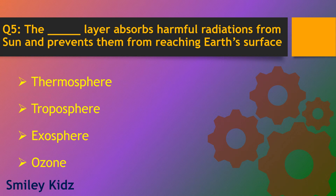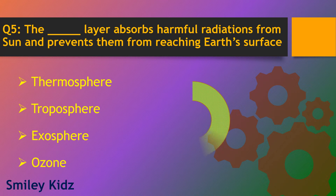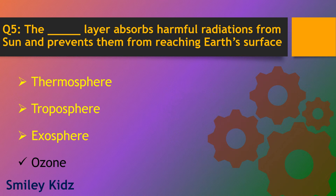Question number 5. The dash layer absorbs harmful radiations from the sun and prevents them from reaching earth's surface. Options are thermosphere, troposphere, exosphere and ozone. The right answer is ozone. The ozone layer absorbs harmful radiations from the sun and prevents them from reaching earth's surface.